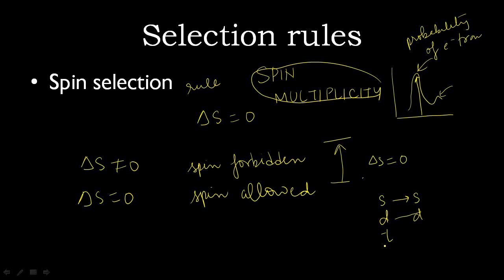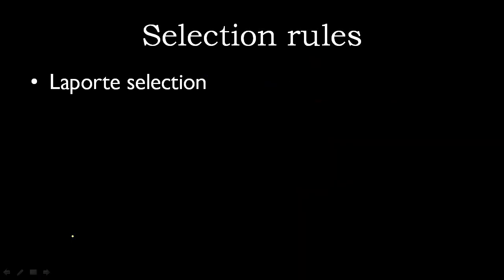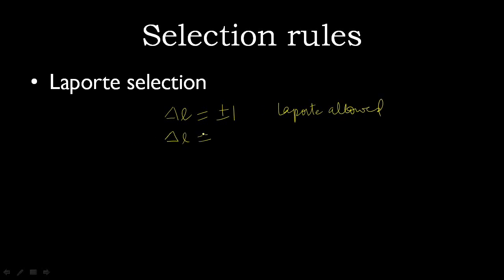The next rule is the Laporte selection rule. In this rule, when ΔL — the change in the value of orbital angular momentum — is equal to ±1, then the transition can take place and it is known as Laporte allowed. When ΔL is not equal to ±1, it is Laporte forbidden. We will be discussing this in detail.